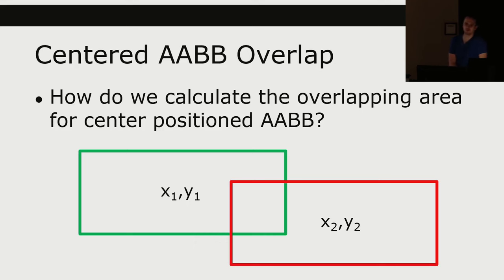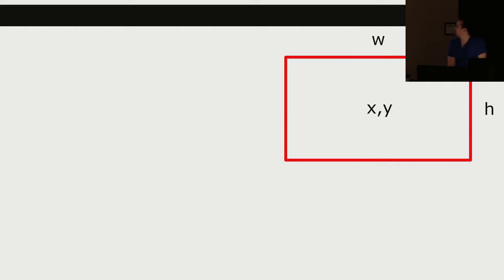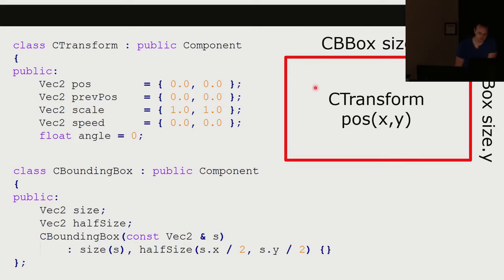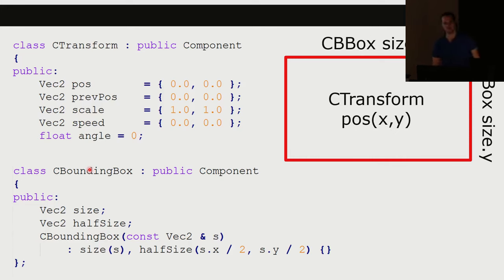This is going to be crucial to assignment three because we're making a Mario clone and we want to be able to intersect bounding boxes. If we have a rectangle specified by x, y as the midpoint, w as the width, and h as the height — inside our entity we have two components. One is the transform, which stores position, velocity, scale, etc. We also have a bounding box component with a given size, and we're also going to store half the size — half the width and half the height. That little bit of extra memory saves us dividing by two everywhere.